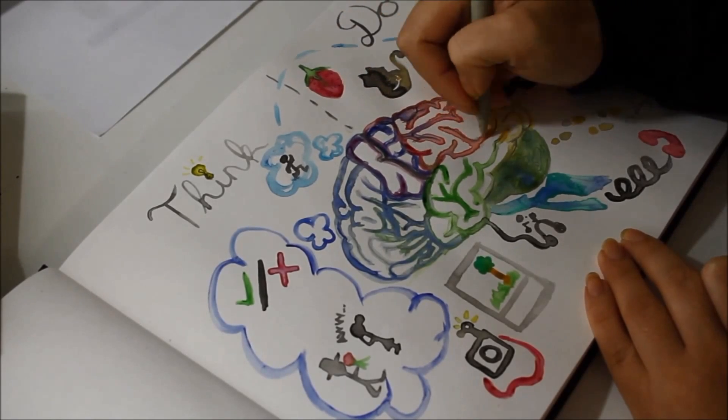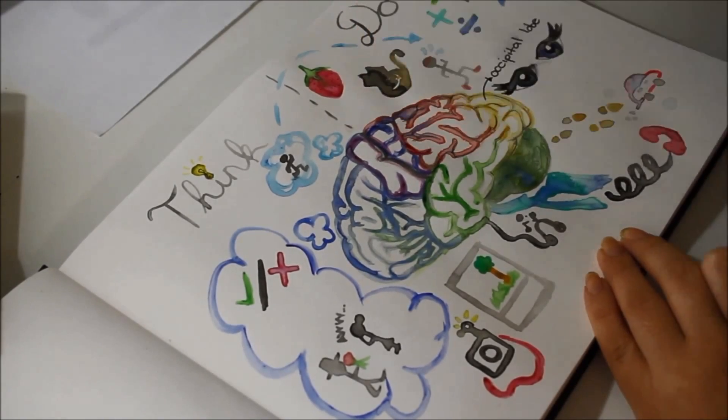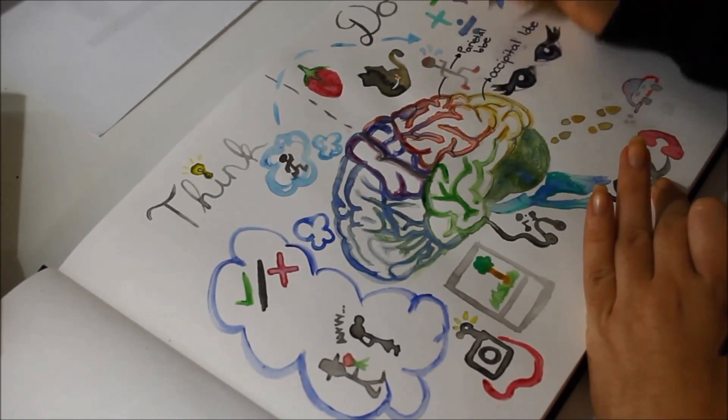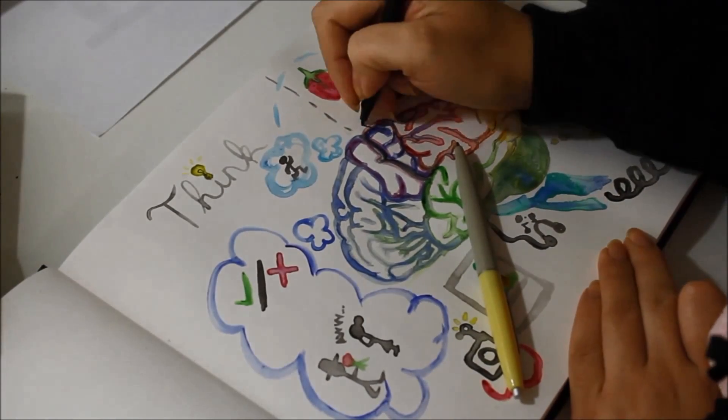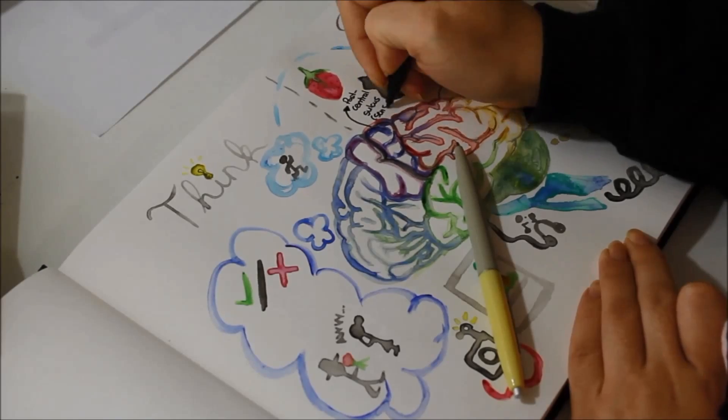The parietal lobe, again, responsible for movement, maths, and the post-central gyrus responsible for all of our sensory information from the outside world into our brain.